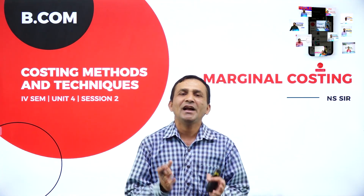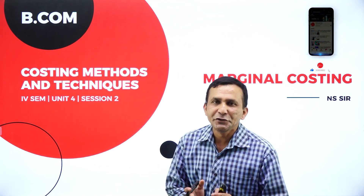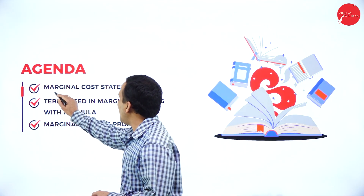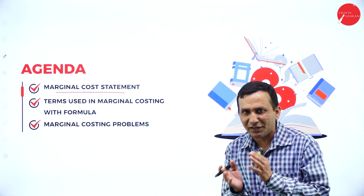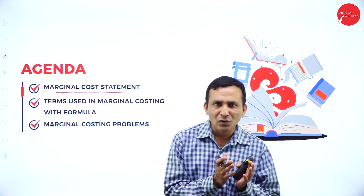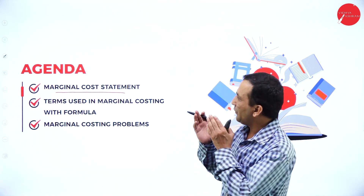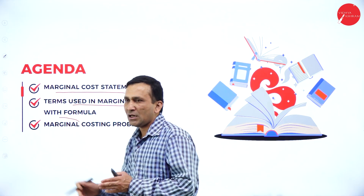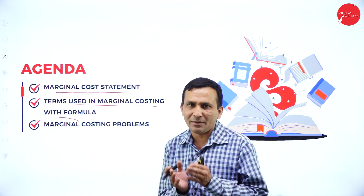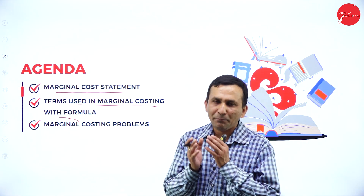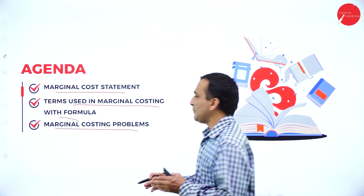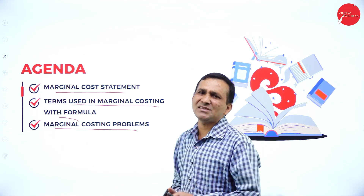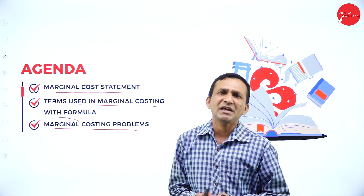In the last session, we covered the theory part and terminology used in marginal costing, including assumptions and usage. Today, my agenda is the marginal costing statement — how to prepare it using sales, variable cost, fixed cost, and all required formula components. We will also look at the terms used in marginal costing with their formulas and how to apply them to marginal costing problems.